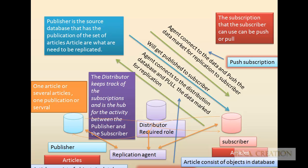A distributor requires roles: there is a publisher, an application agent, and a subscriber. Articles consist of the objects in the database. The subscriber can use push or pull. You can replicate a single article, multiple articles, or the whole database. The distributor keeps track of the subscriptions and is the hub of activity.